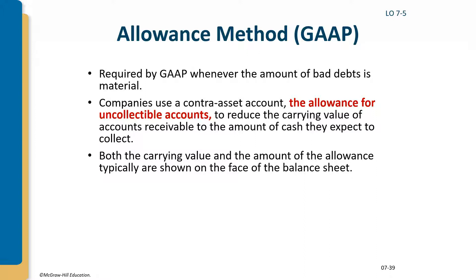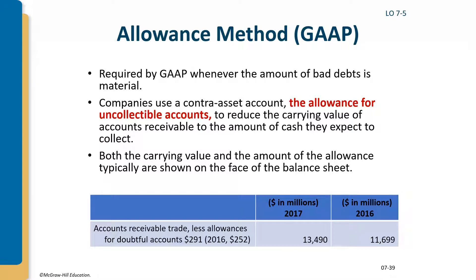When reporting accounts receivables on the balance sheet, we subtract the allowance for uncollectible accounts balance. So we list accounts receivable less the allowance for doubtful accounts. The resulting net realizable value — accounts receivable minus the allowance — is what's actually reported on the balance sheet.